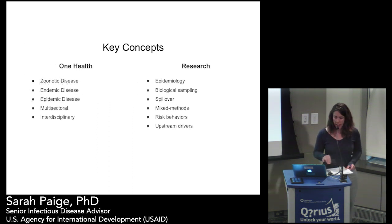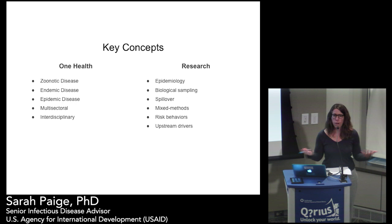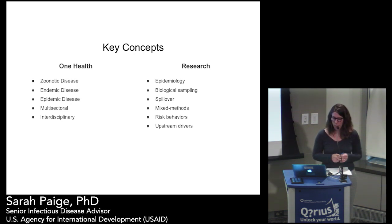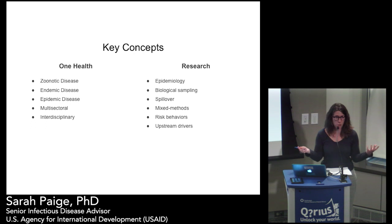Key concepts: zoonotic diseases are diseases that move from animals to people, and they can go the other way too — those have been called anthropozoonotic, but that's quite a mouthful. Endemic diseases are constantly present, things we're used to dealing with. Epidemic diseases can move into broader spaces. Emerging diseases are endemics that show up in a geographic location where they're not normally, have higher virulence than normal, or are something entirely new.